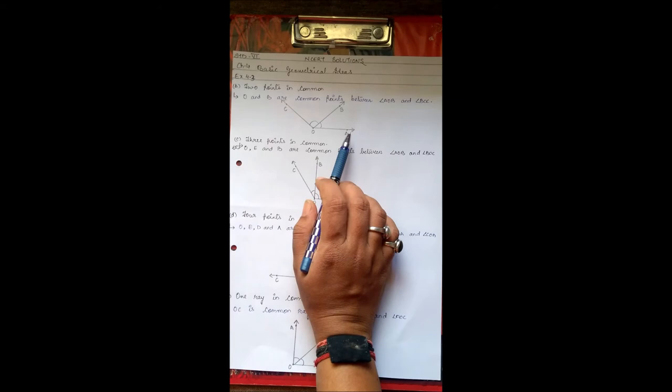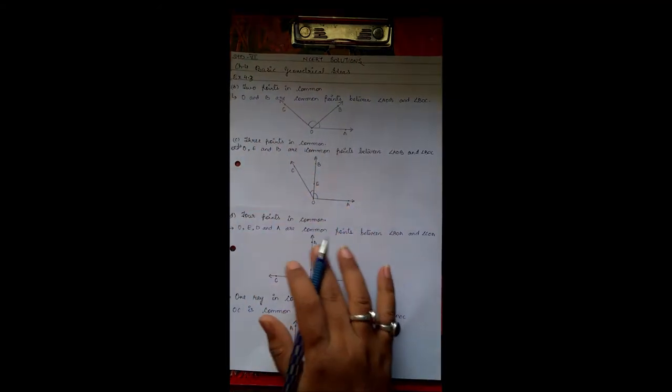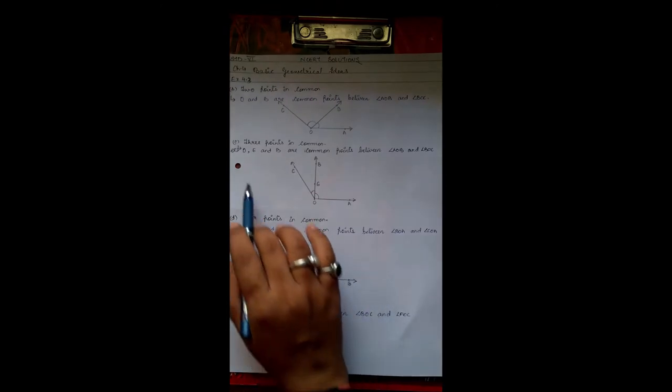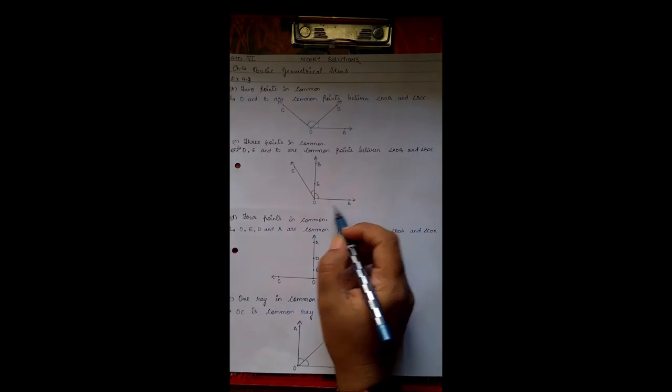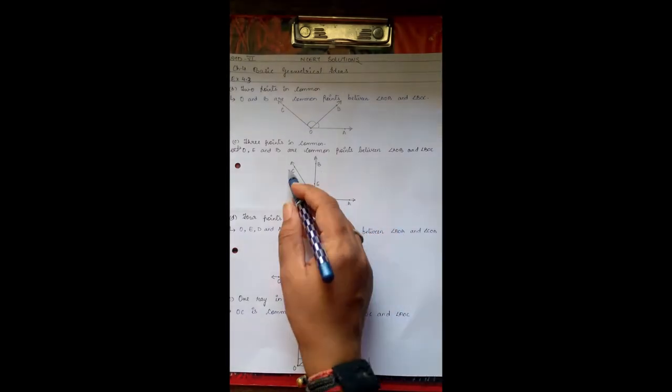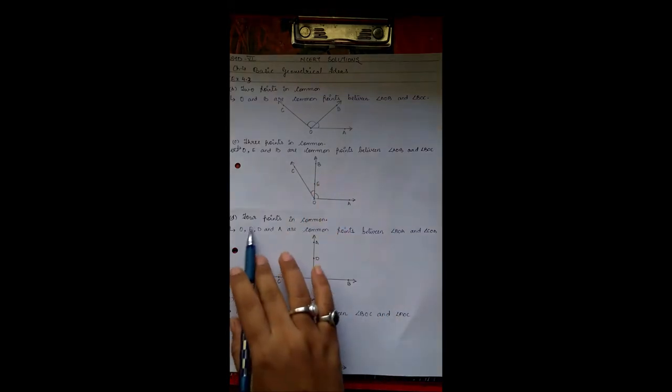Three points in common. So O, E, B. The angles formed are AOB and BOC, and the common points are O, E, B.